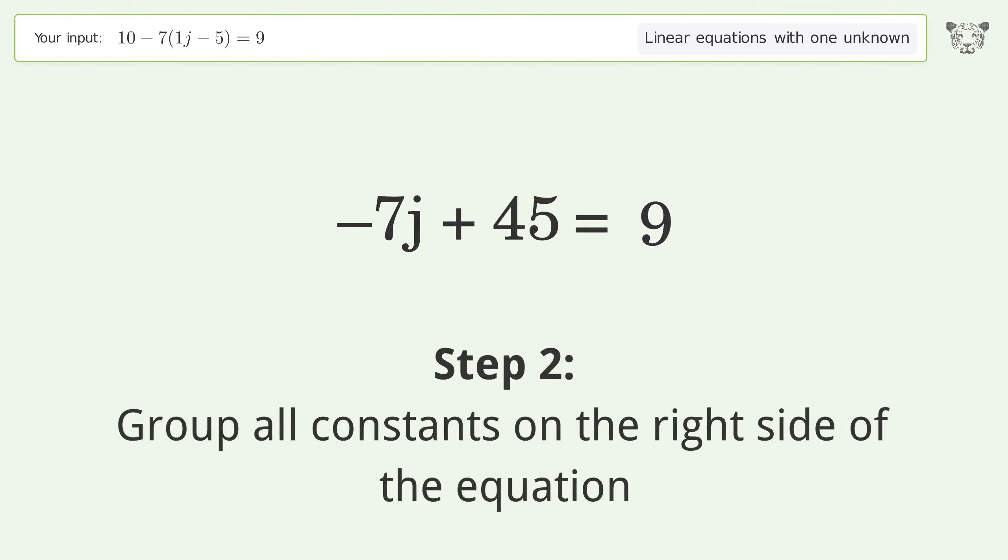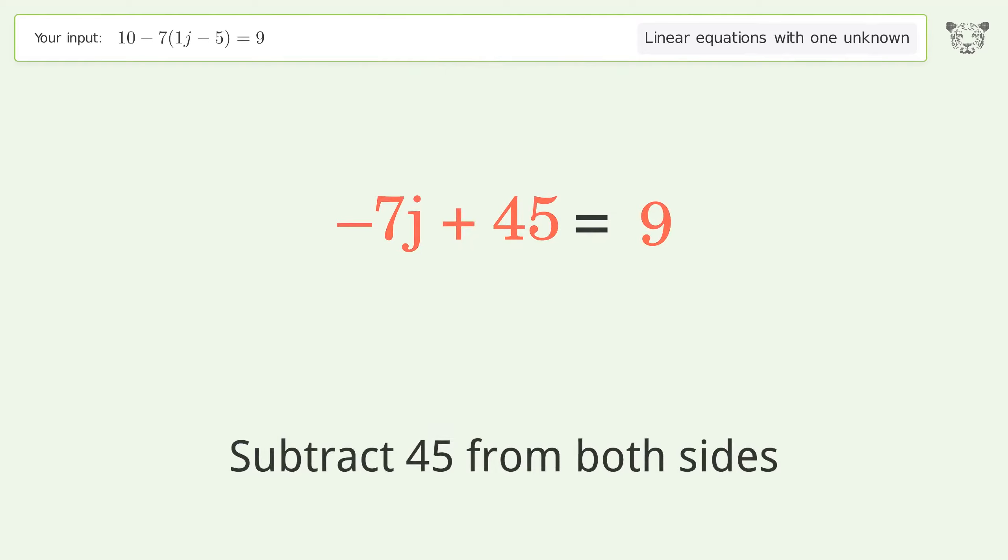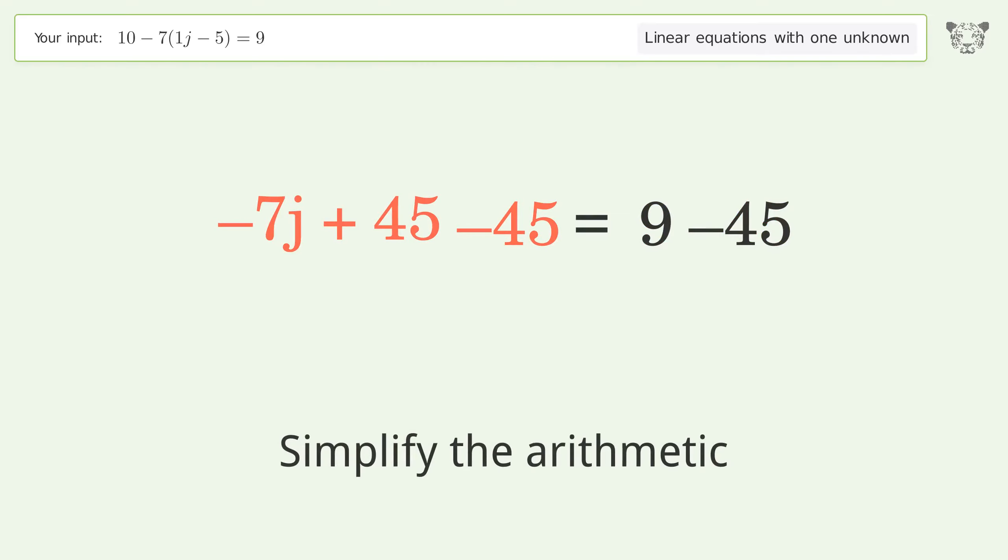Group all constants on the right side of the equation. Subtract 45 from both sides. Simplify the arithmetic.